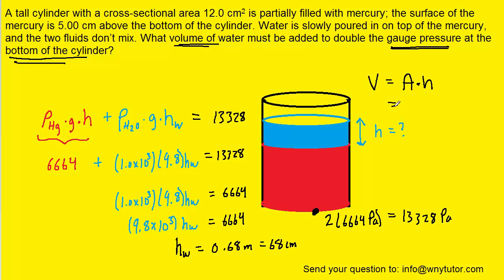We were told that the cross-sectional area of the cylinder is 12 cm². We plug in 12 cm² for the cross-sectional area A. The height we just determined to be 68 centimeters.